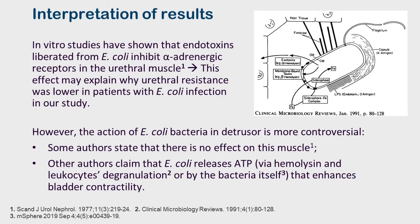The endotoxins liberated from E. coli inhibit alpha adrenergic receptors in the urethral muscle. This effect may explain why urethral resistance was lower in patients with E. coli infection in our study.